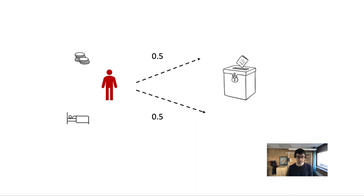The thief has reason to steal because he needs some money, but he also has reason not to steal because he promised his mother to be a good person. Moreover, this is an indeterministic universe, so what decision he ends up making depends on chance — a 50% chance that he will steal the money, and a 50% chance that he won't.